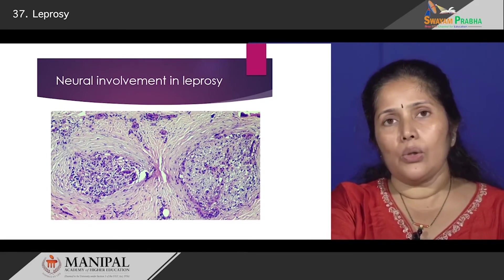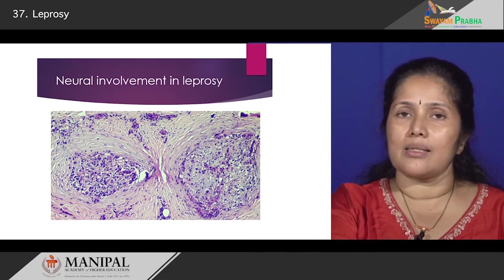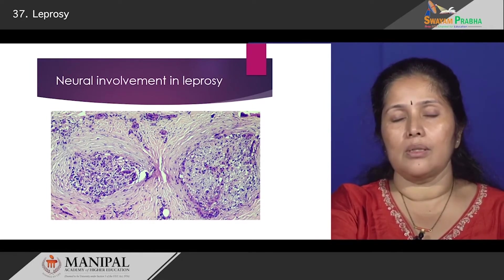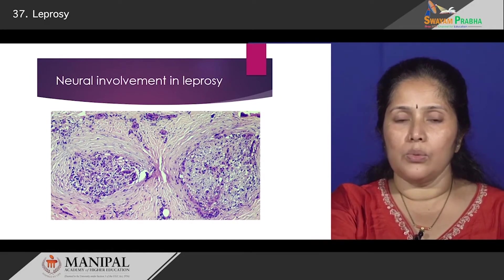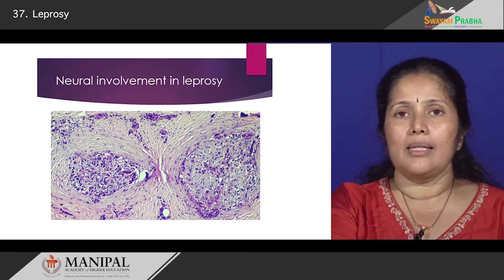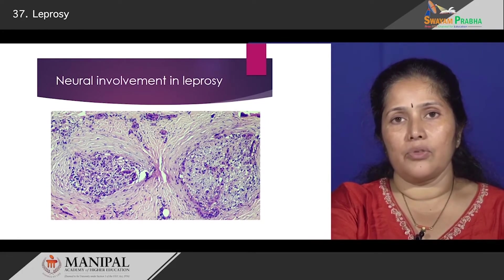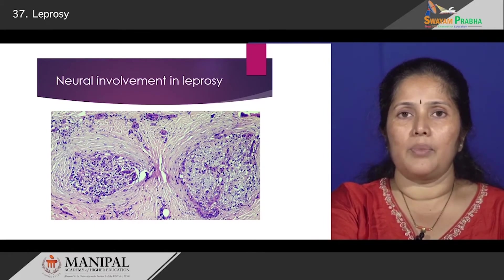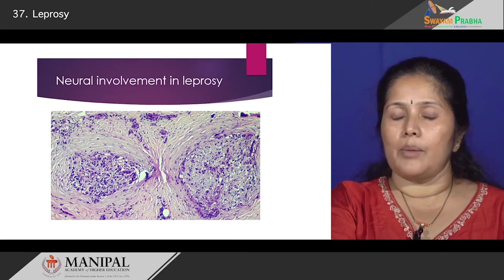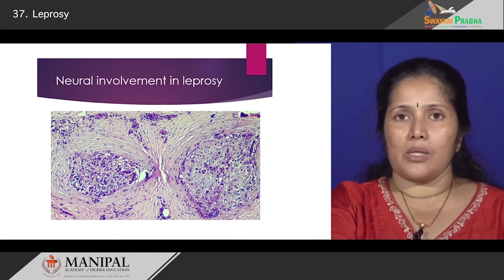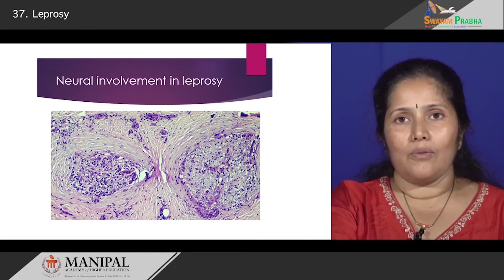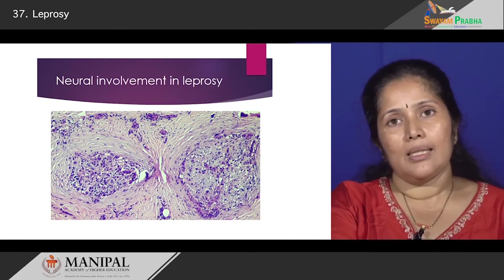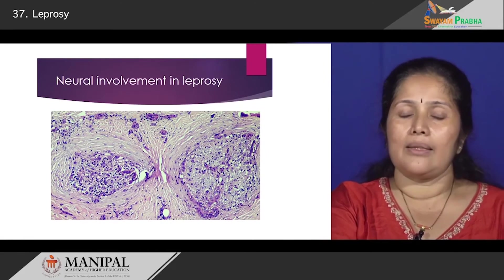There is also a lot of neural involvement in these patients. We said that skin and nerves are primarily involved, and this picture shows how the nerves are expanded with a lot of inflammatory cells infiltrating into the nerve bundles, causing thickening and enlargement. So that was lepromatous leprosy — multiple lesions, high anaesthesia, a grenz zone microscopically, and proliferation of macrophages in the dermis.